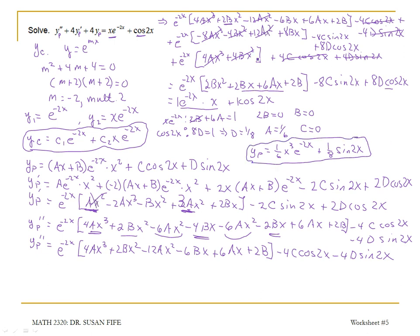Putting the particular solution together with the complementary solution, we get the general solution: yc plus yp is c1 e to the negative 2x plus c2 x e to the negative 2x plus 1 sixth x cubed e to the negative 2x, plus 1 eighth sine 2x. And that's our general solution.